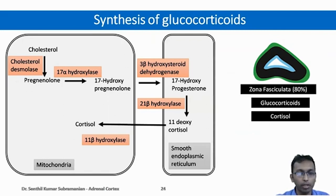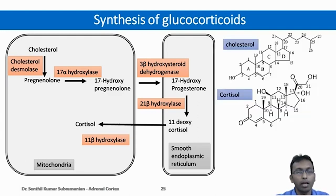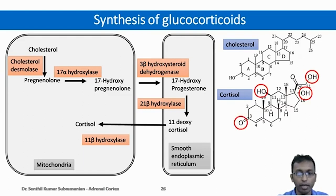These are the various steps involved in the synthesis of glucocorticoids. Glucocorticoids are produced from zona fasciculata, which forms 80% of the adrenal cortex, and the important glucocorticoid in humans is cortisol. Cholesterol is hydroxylated at positions 21, 17, and 11-beta, and dehydrogenated at position 3-beta. From cholesterol, the side chain is cleaved by cholesterol desmolase, and it is hydroxylated at positions 21, 17, and 11.